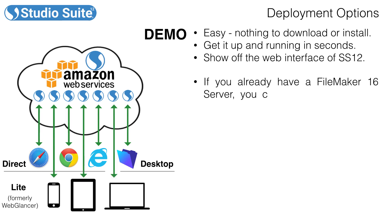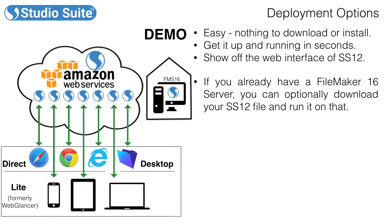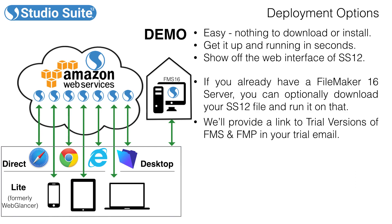Now if your organization already has FileMaker Server 16 installed on your premises, you can request to download a copy of the Studio Suite 12 file to install on your local in-house server. That would provide all the same access points you would have as hosted from Amazon Web Services, but you're hosting it yourself. In these cases, we can also provide links to trial versions of FileMaker Server and FileMaker Pro.